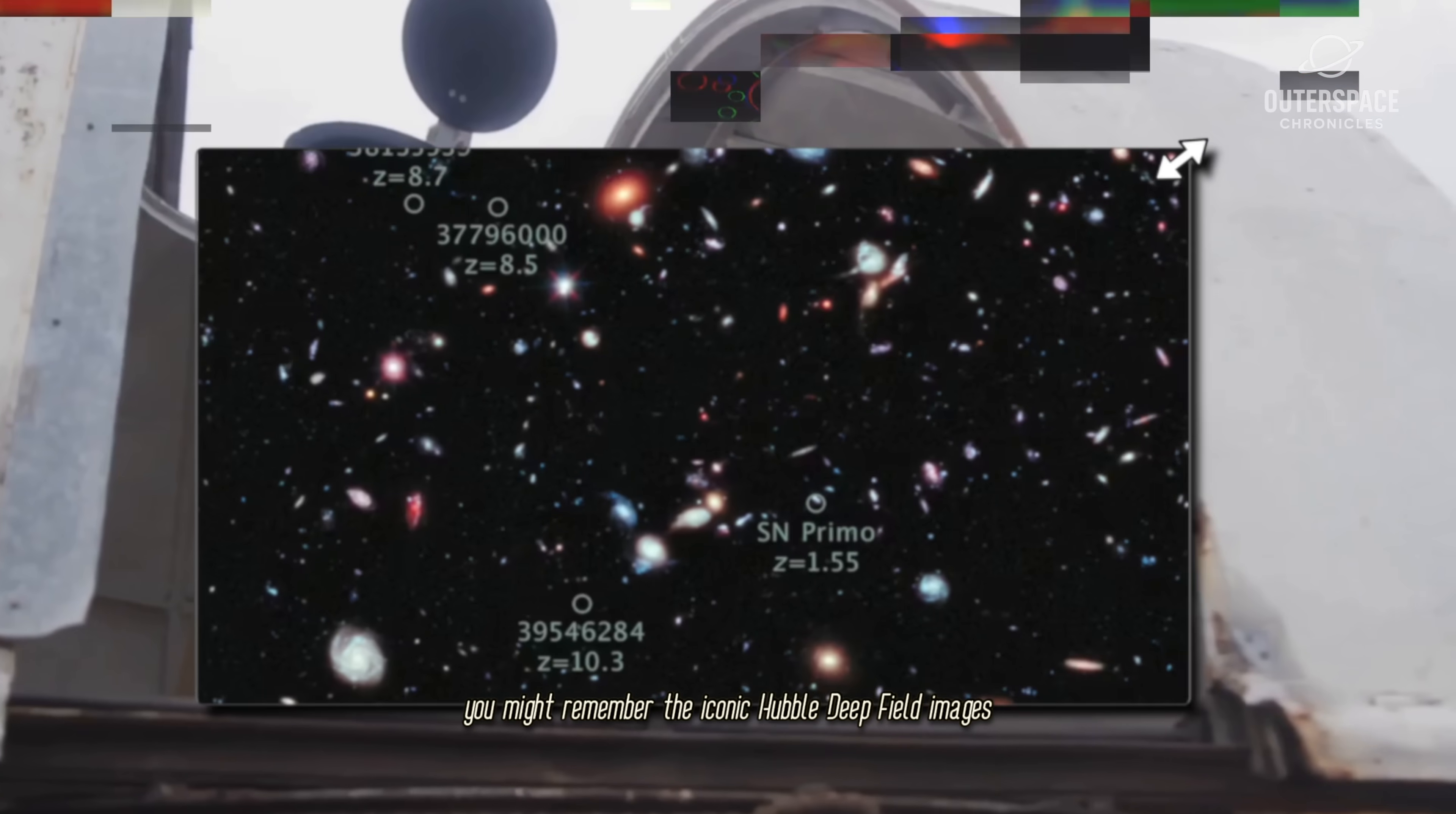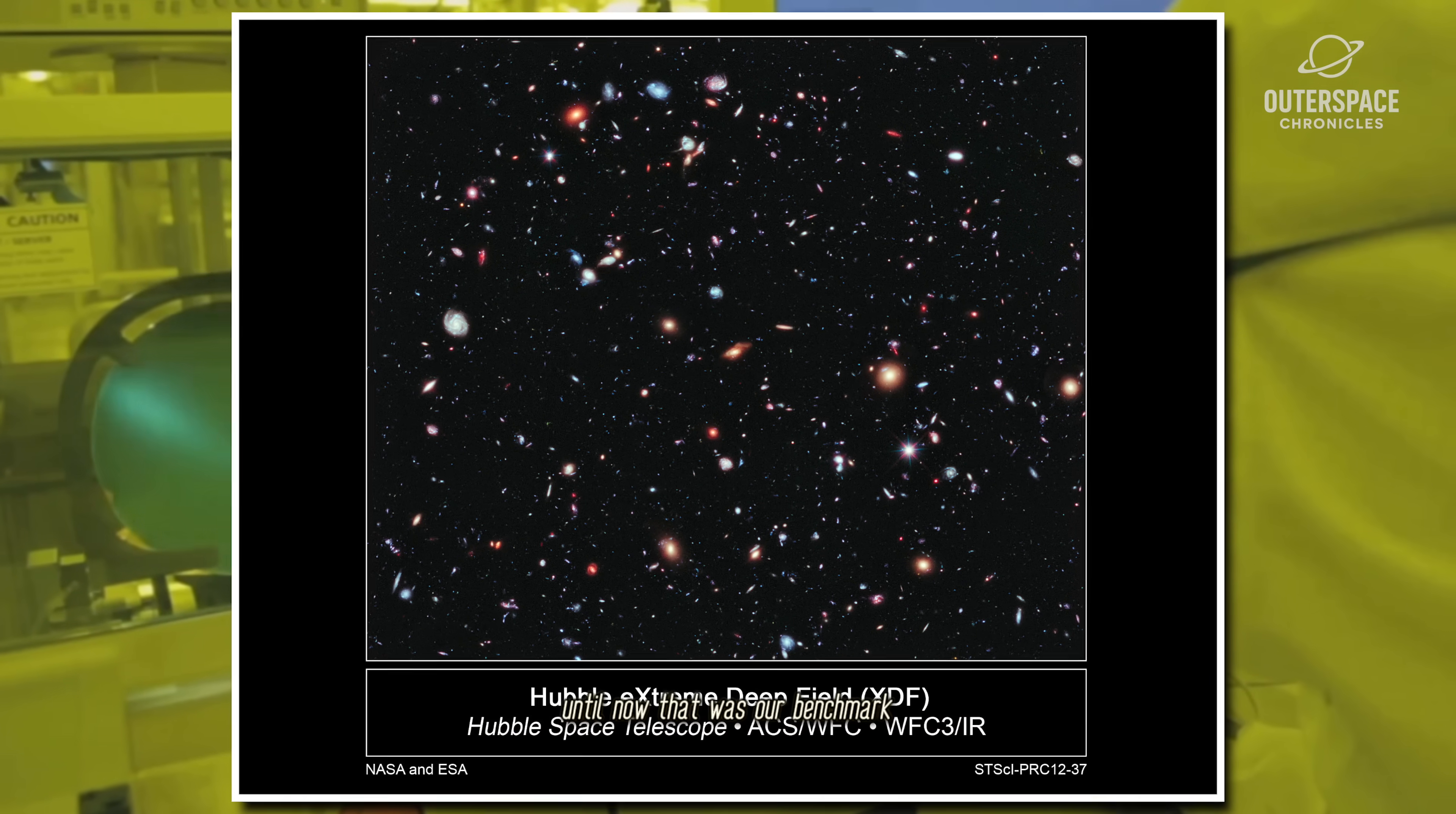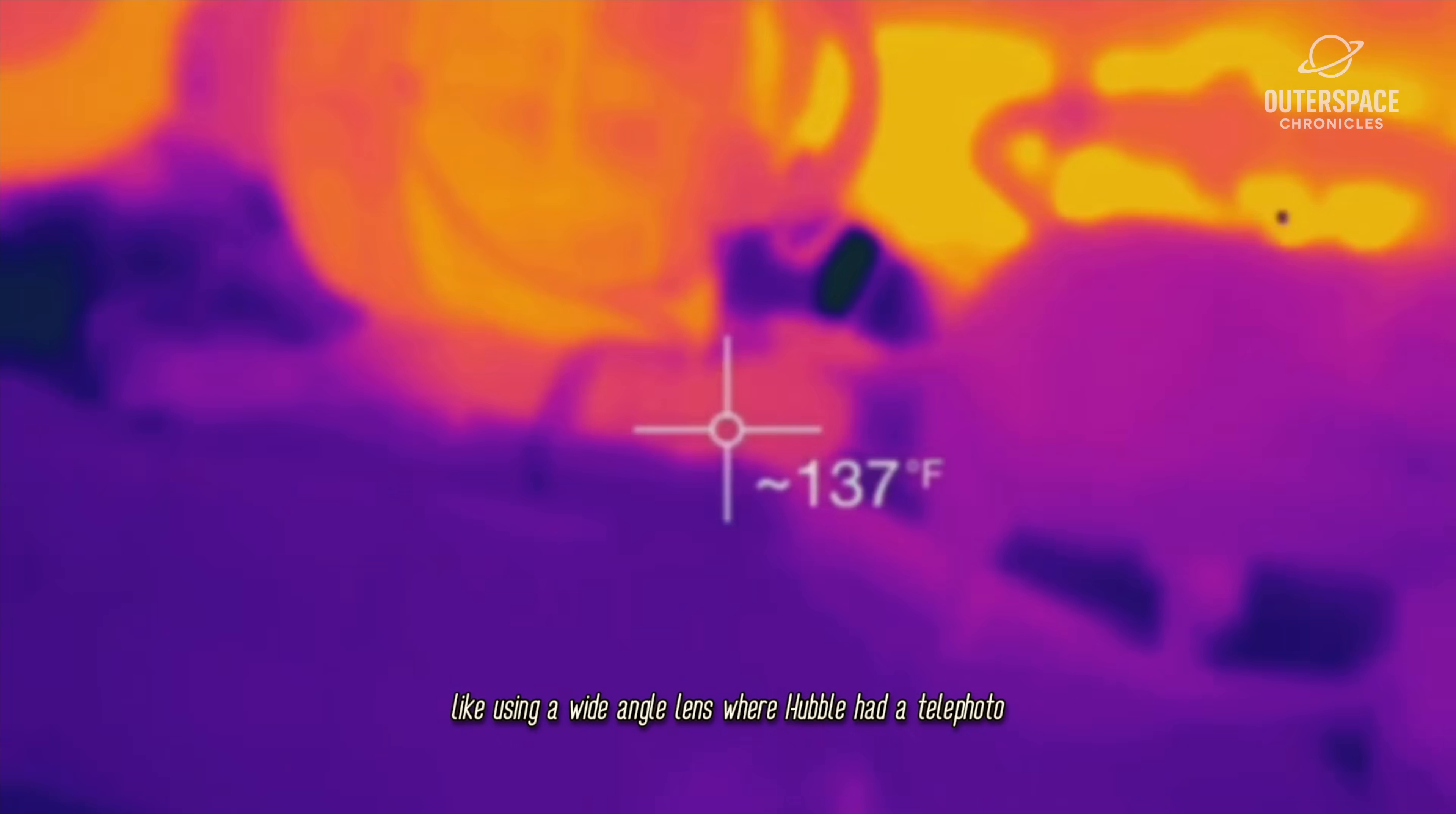You might remember the iconic Hubble Deep Field images. Those were revolutionary, showing us thousands of galaxies in a tiny speck of sky. Until now, that was our benchmark. But Cosmos Webb is on another level, like using a wide-angle lens where Hubble had a telephoto.